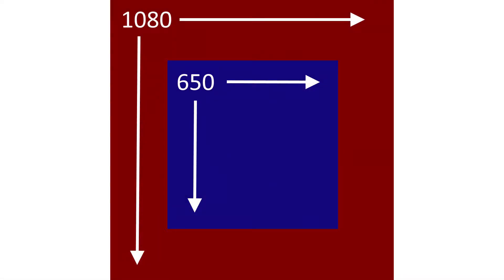What we want to look at is what size you're going to need to have your images. You can have them as large as 1080 by 1080 — this is pixels, not centimeters, not inches, pixels. They can be as small as 650 by 650 pixels. Keep them square.